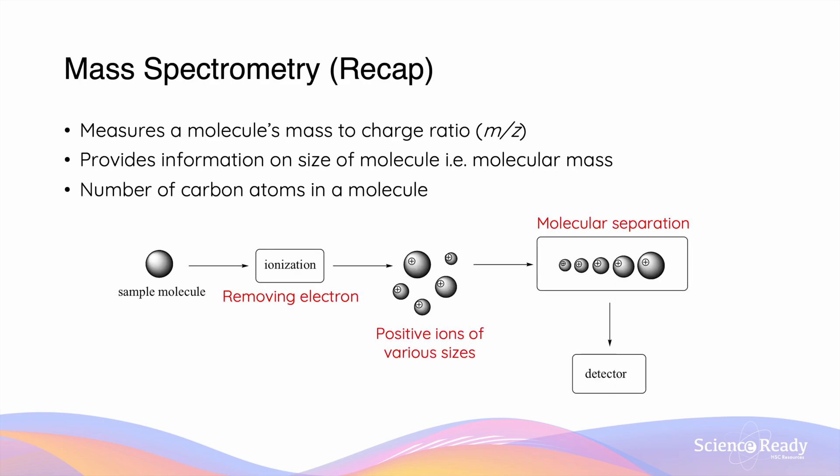Just to recap about mass spectrometry. Mass spectrometry is a spectroscopic technique which measures a molecule's mass-to-charge ratio, or the m-to-z ratio. Interpreting the mass spectrum can provide us with data about the size of a molecule, such as its molecular mass, and we can use this molecular mass to help us identify the number of carbon atoms in the molecule.